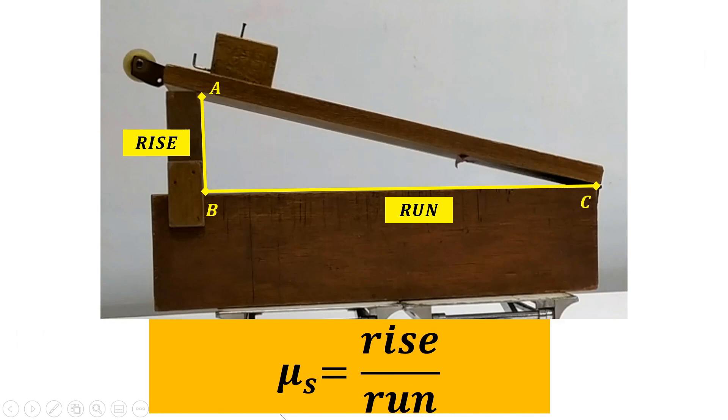For procedure 2, we will get the coefficient of static friction by getting the rise and the run. For the rise, we will measure from point A to point B. And for the run, we will have point B to point C.